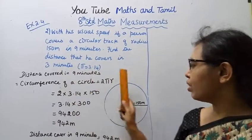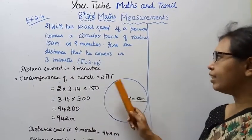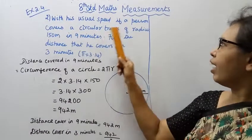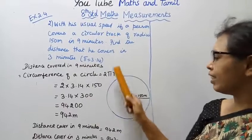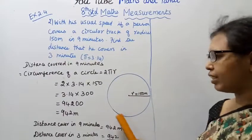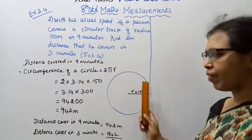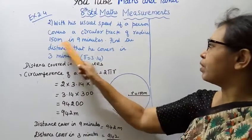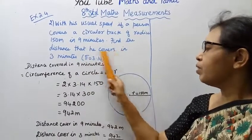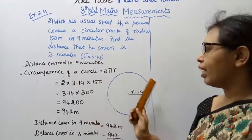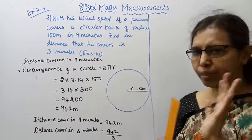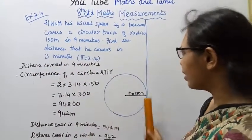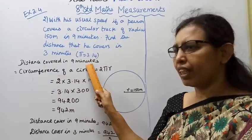He covers a circular track in 9 minutes. The radius is 150 meters. Find the distance that he covers in 3 minutes. Distance covered in the full circle is the distance covered in 9 minutes.